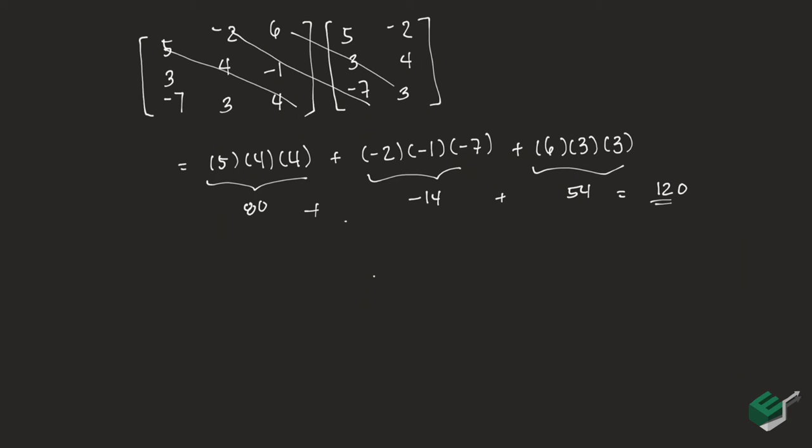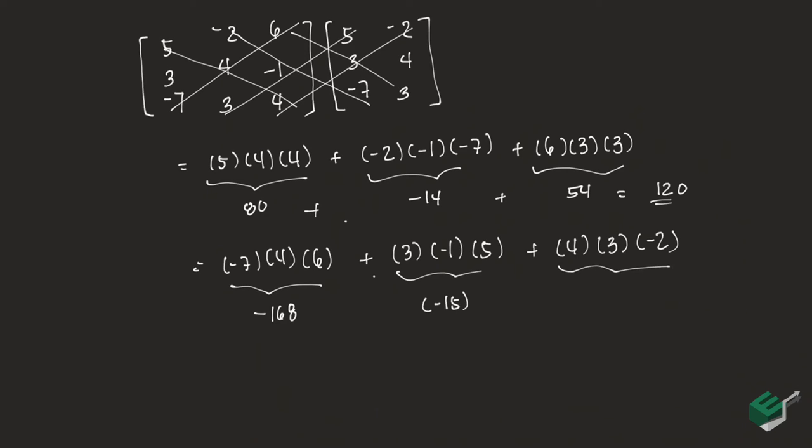So let's do now our upper diagonal. We get negative 7 times 4 times 6 plus 3 times negative 1 times 5 plus 4 times 3 times negative 2. If we multiply this form, we get negative 168. This form we get negative 15. This form we get negative 24. We add this and we get negative 207.